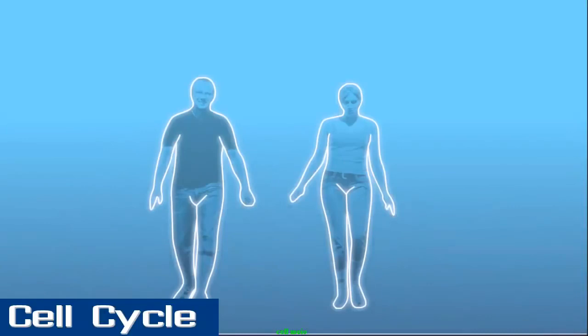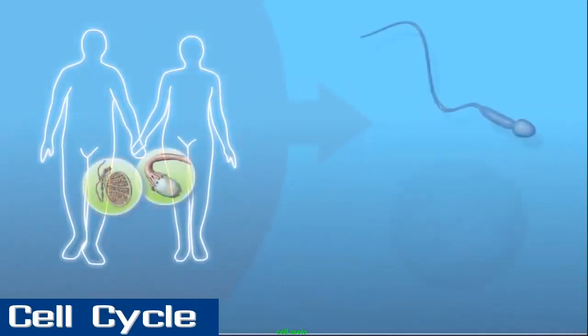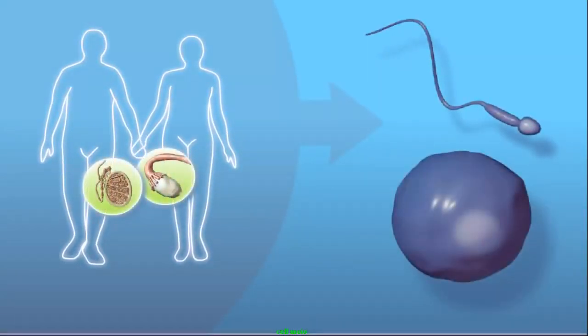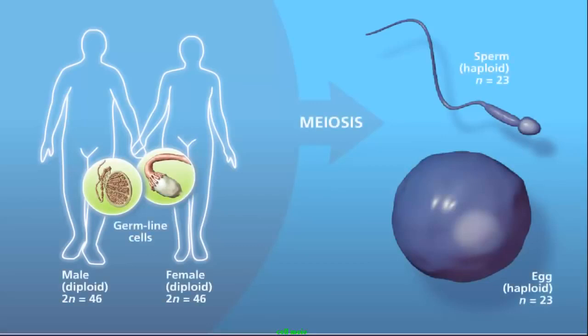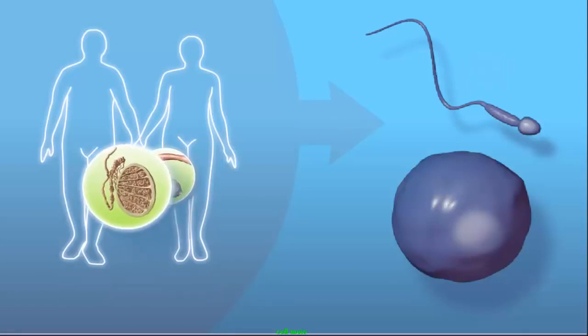Meiosis is the process by which haploid cells are produced from a diploid cell. For this to occur, the chromosomes must be correctly sorted and distributed in a manner to create genetically unique cells with half the number of chromosomes as the original cell.